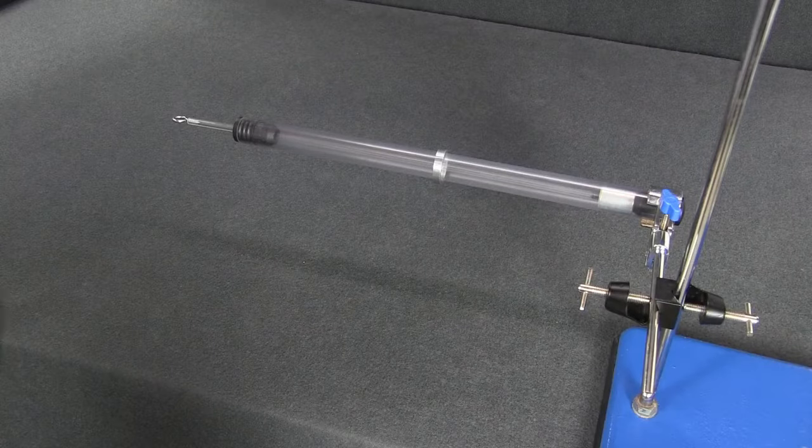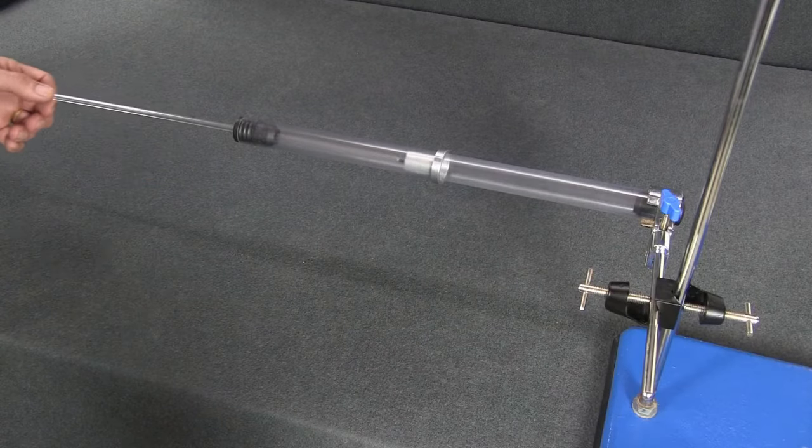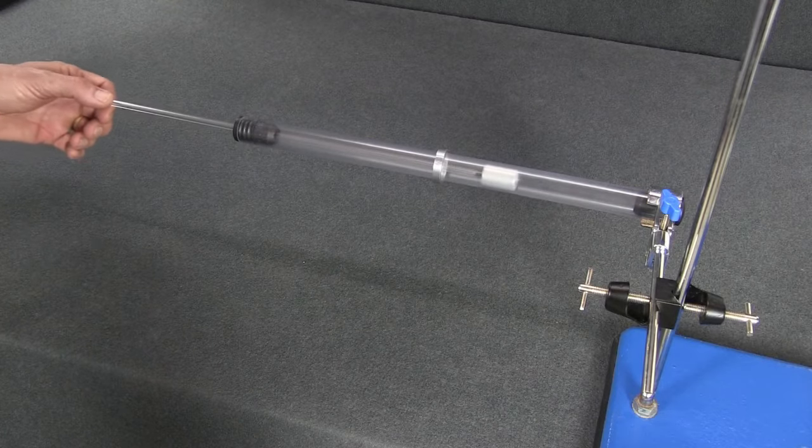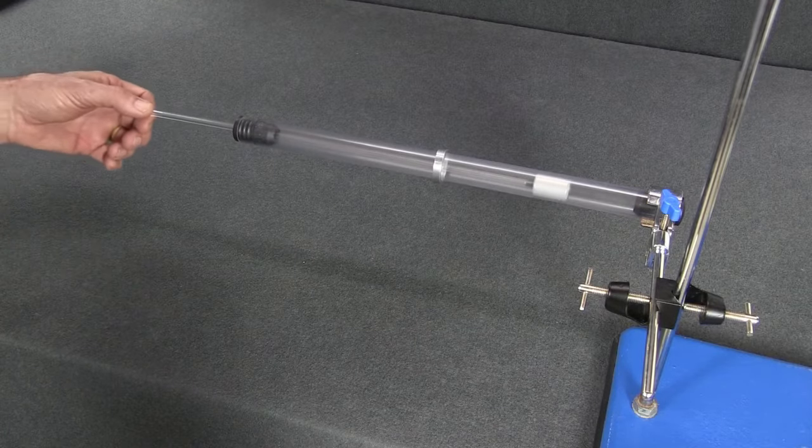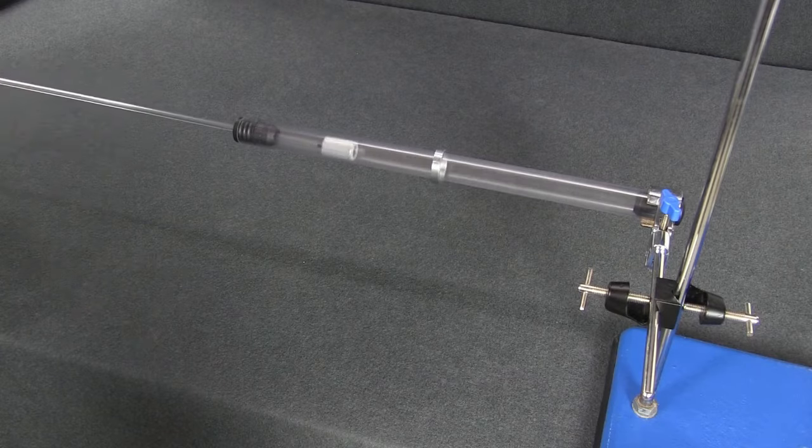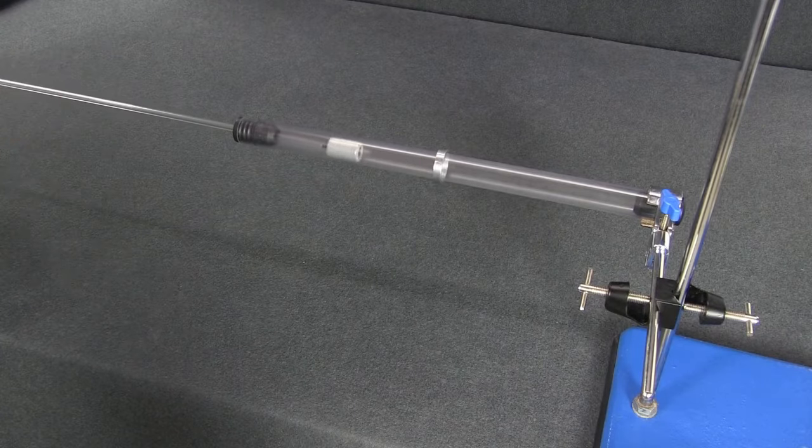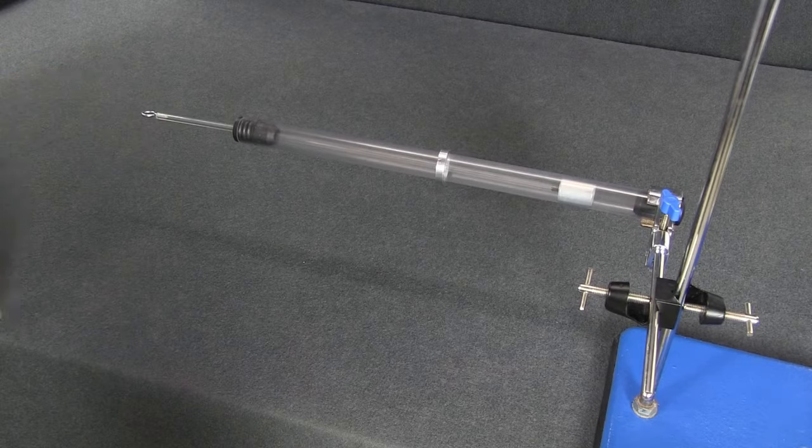Remember the split ring experiment? When we moved the magnet slowly, the ring just moves a little bit. When we moved it quickly, it moved a lot more. Can you explain this?